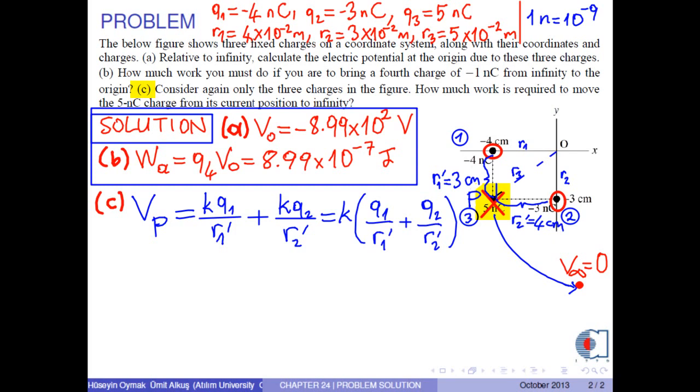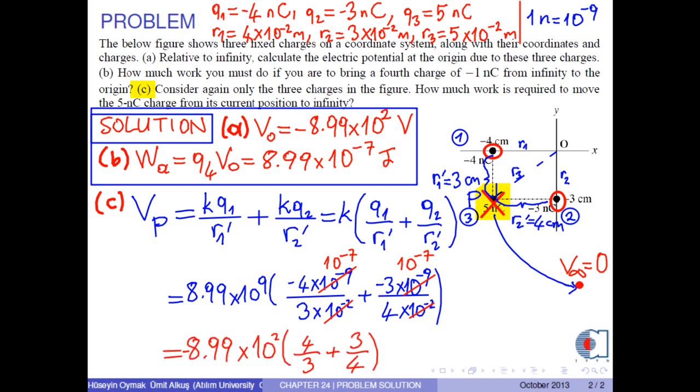As you see, K is common to both terms. Now, we can insert the numerical values into this formula. Again, 10 to negative 7 is common to both terms. Therefore, we can write negative 8.99 times 10 to 2 times 4 over 3 plus 3 over 4. The simple calculation in the parentheses gives us 25 over 12. Therefore, we obtain the potential at point P due to charges Q1 and Q2 as negative 1.87 times 10 to 3 volts.